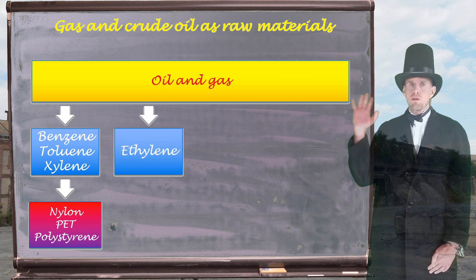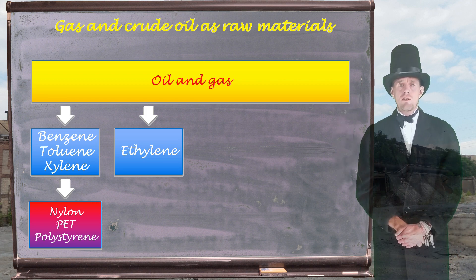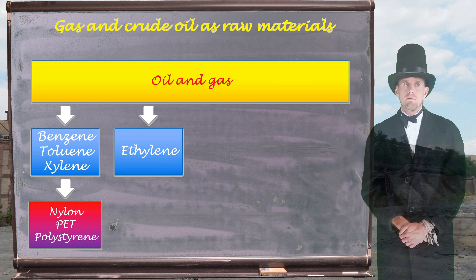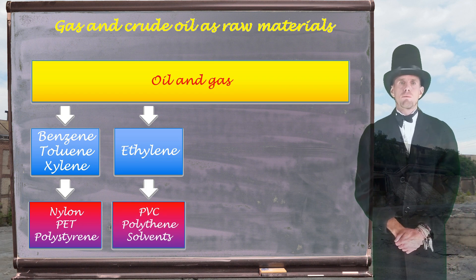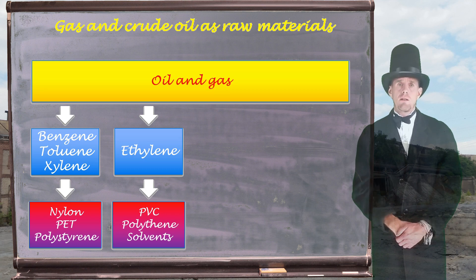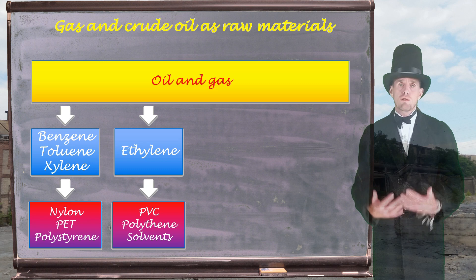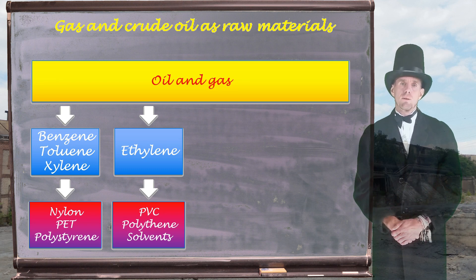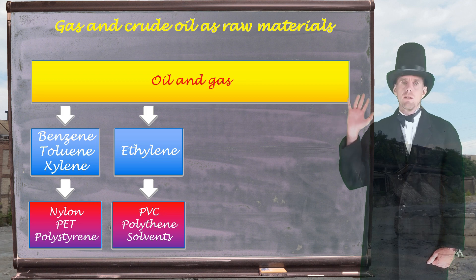Alongside benzene, toluene, and xylene, we have ethylene — a very, very simple molecule, but an essential building block for the chemical industry. From ethylene, via a number of different intermediate chemicals, we'll end up with things like refrigerants, some anaesthetics, polyvinyl chloride, and other polymers. Polyethylene is one of the first manufactured polymers, as well as a host of solvents such as dry cleaning fluids or paint solvents — all derived from oil and gas via ethylene.